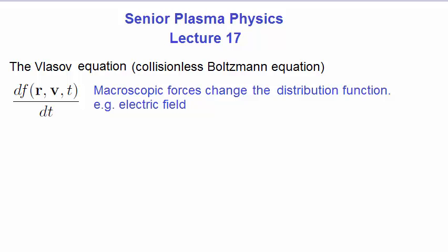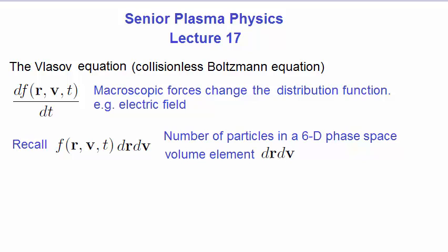Recall what the distribution function means. If we multiply it by dr dV, we are multiplying by a volume element in a six-dimensional phase space. So f dr dV is the number of particles in that six-dimensional phase space volume element. Also recall that dr dV is given by this.